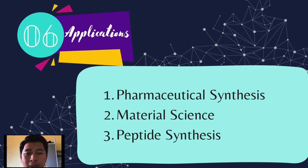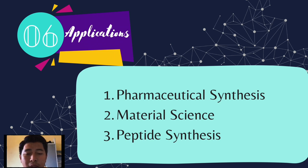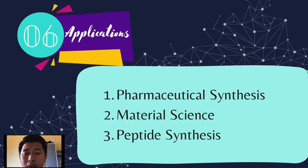Secondly, material science: the formation of C-N bonds through the Buchwald-Hartwig reaction is important in the field of material science. It allows functionalization of organic molecules for the development of new materials with tailored properties. For example, this reaction has been utilized in the synthesis of conducting polymers, which find application in electronic devices, sensors, and energy storage systems.